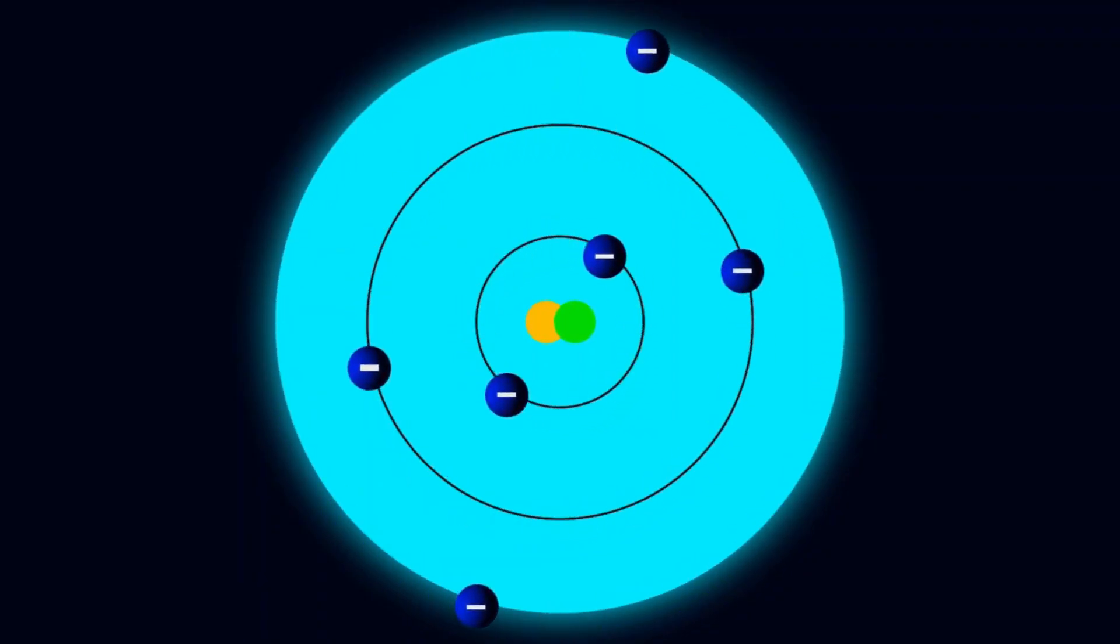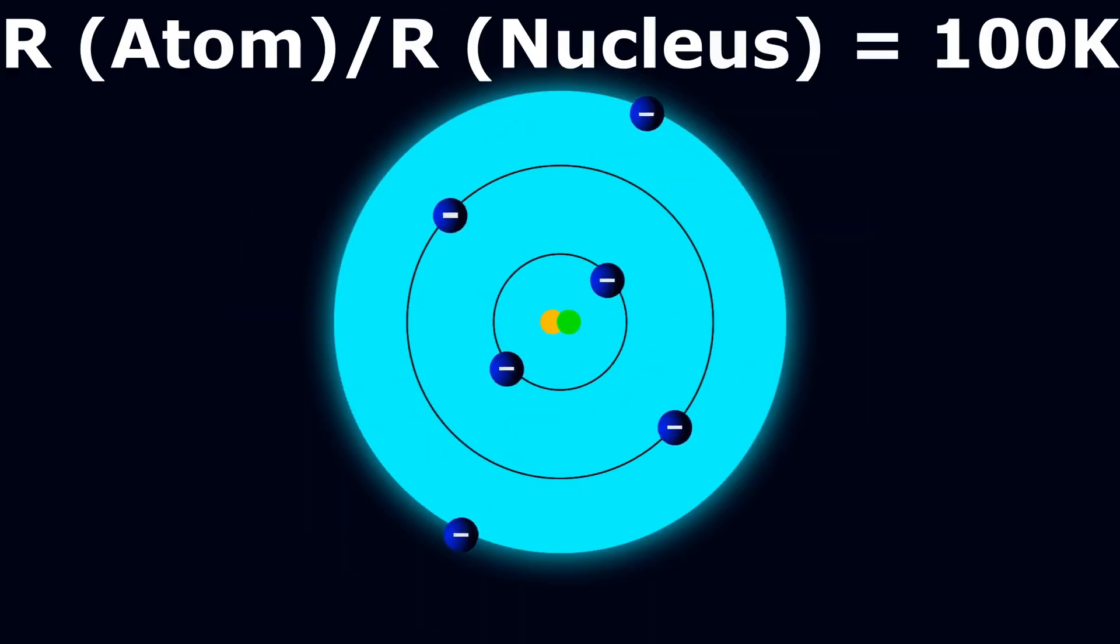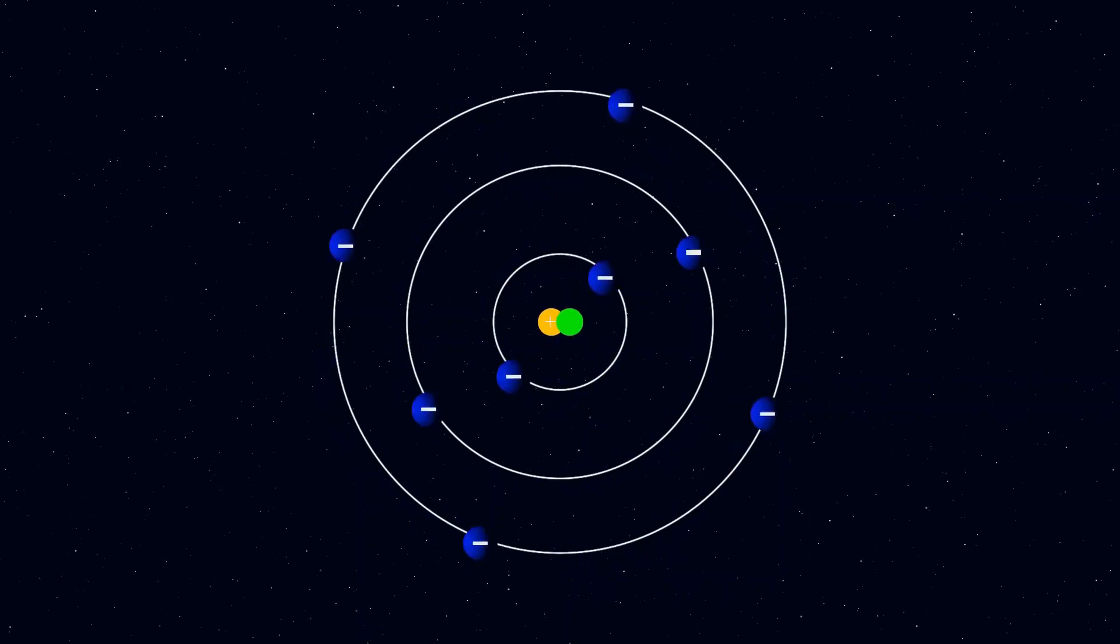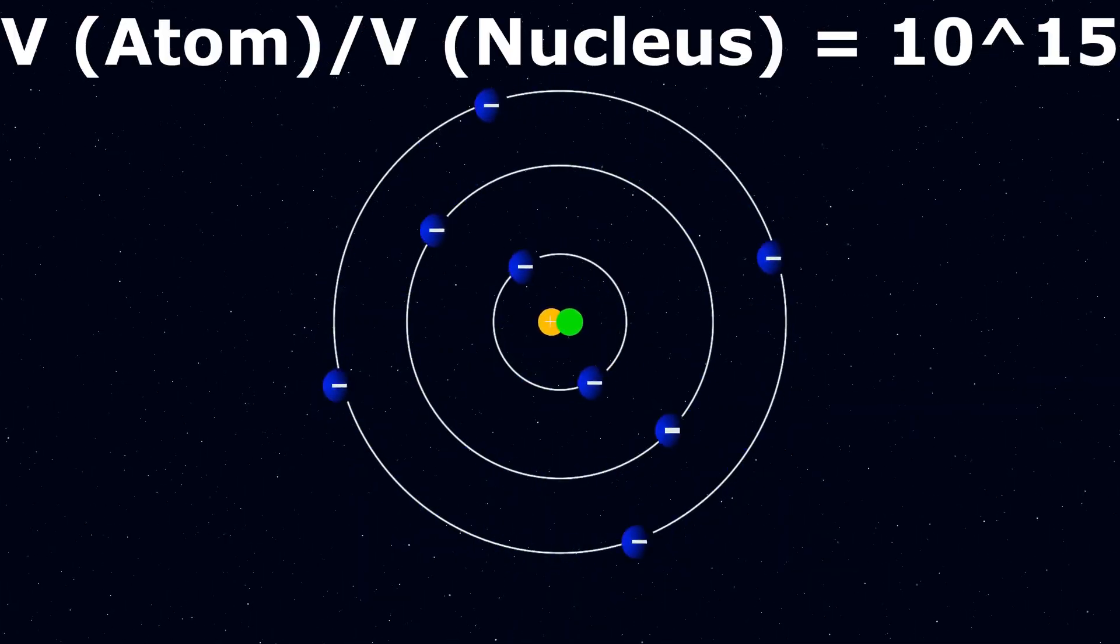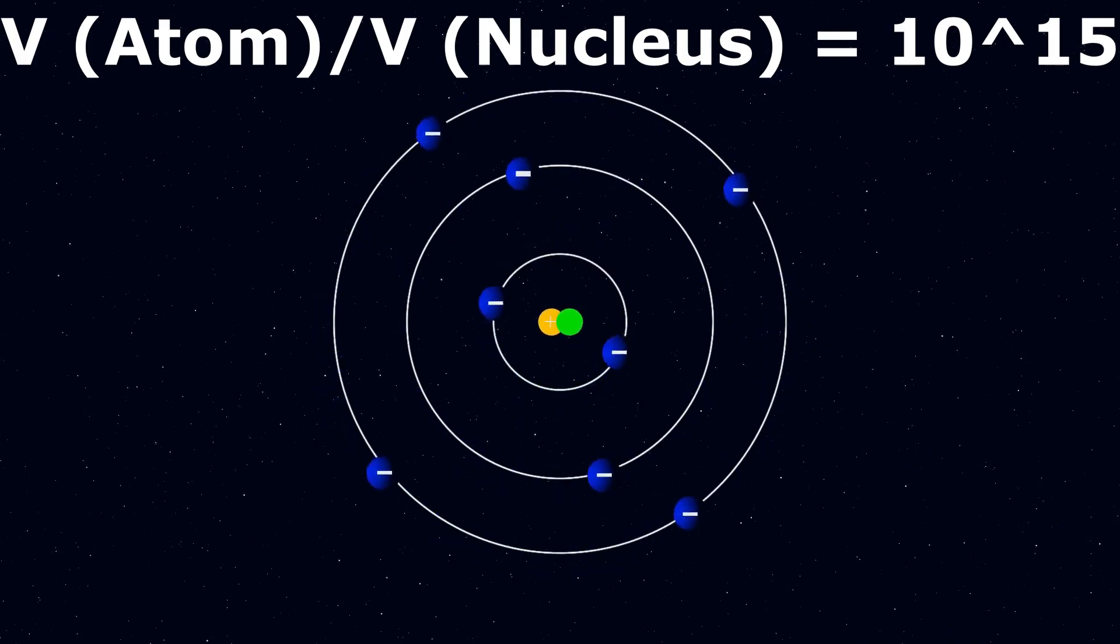The radius of the nucleus of an atom is 100,000 times smaller than that of the atom. So the volume of the nucleus is 10 to the power of 15 times smaller than the volume of the atom.